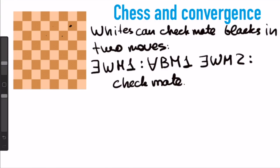So far this is not very interesting, but here is what I want to do. Let us negate the statement. In other words, let us write a condition for when whites can't checkmate blacks in two moves, no matter what they do.